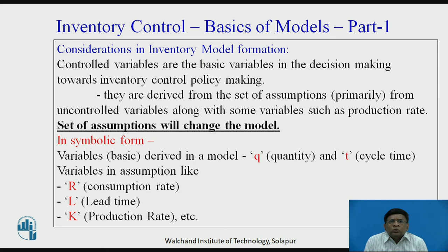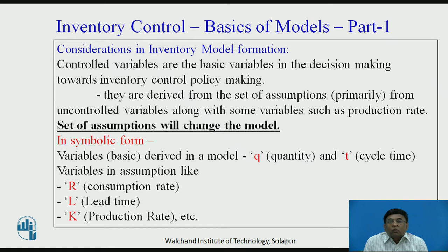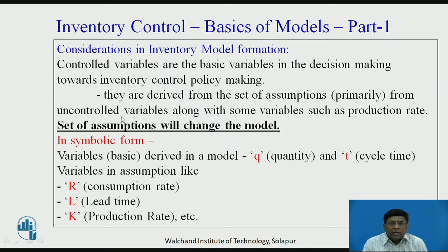As we discussed, controlled variables become the strategic decision-making part of any industry. They are derived from a set of assumptions of certain variables — uncontrolled variables and other parameters like production rate. Whatever you assume, for example whether shortage is permitted or not permitted, what the consumption rate or production rate is, whether they are zero, infinite, permitted, or not permitted — based on that set of assumptions, we get the model. As the set of assumptions changes, the model will change.